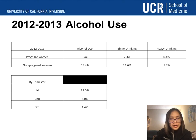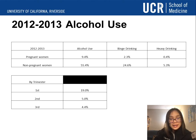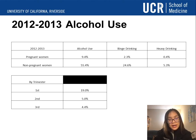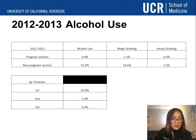Breaking that down further in terms of alcohol use, pregnant women reported at 9.4 percent, with binge drinking at 2.3 percent and heavy consistent drinking reported at 0.4 percent. Interestingly, the alcohol data was broken up by trimester. It was heaviest during the first trimester at 19 percent, but reported to decrease significantly by the second and third trimester.